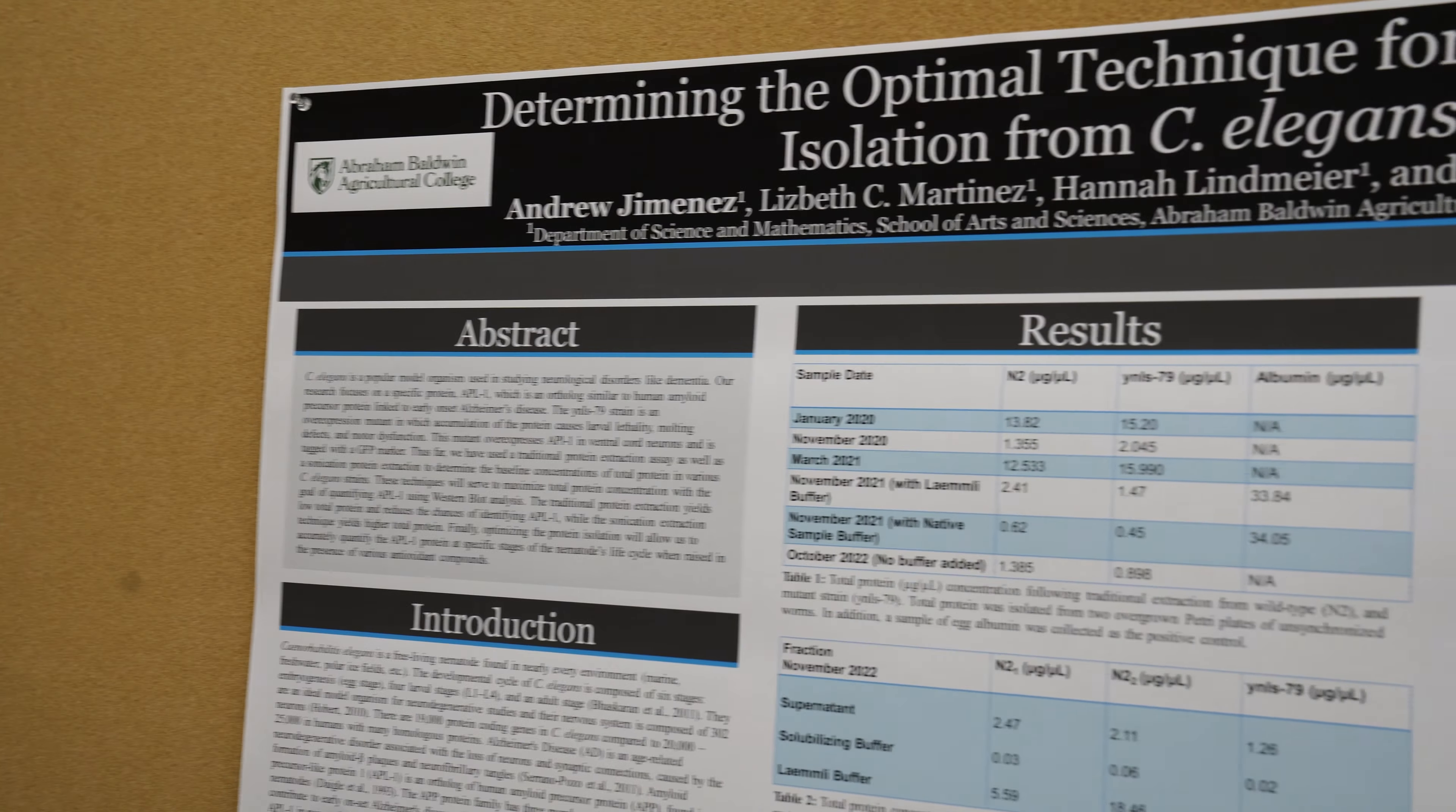In humans, we have a protein called APP, an amyloid precursor protein, that tends to cause dementia or early onset Alzheimer's disease.